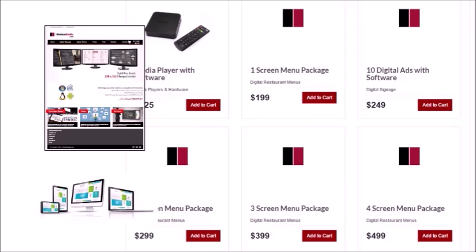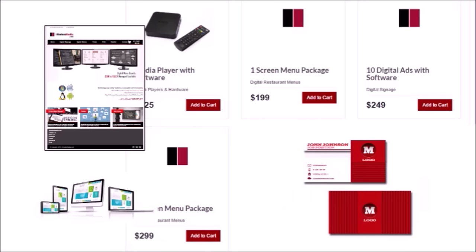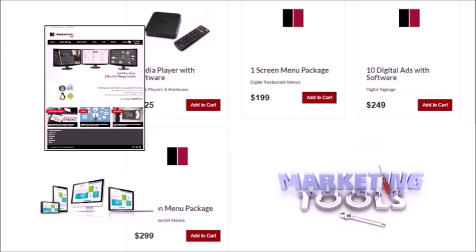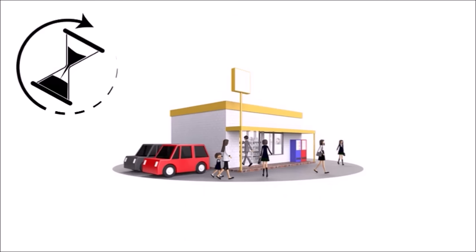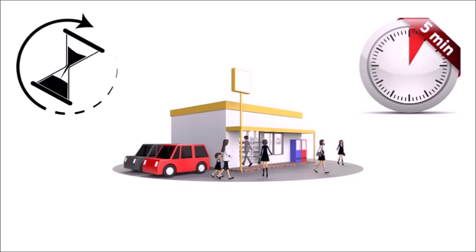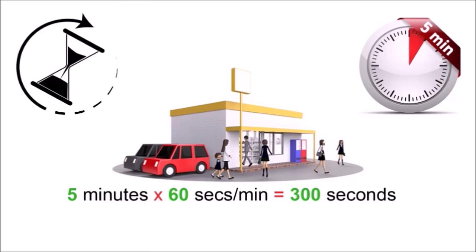Make sure you have a website advertising all your services as well as pricing, a PayPal account so you can accept payment, business cards, and all necessary marketing tools. Also, be sure to strategically calculate your loop time. In digital advertising, loop time is the length of time in which all your combined ads run from beginning to end. So if you are placing ads in a convenience store, note the average time spent there is about 5 minutes. 5 minutes times 60 seconds equals 300 seconds. Divide 300 seconds by 10 seconds per ad equals 30 ads — you can fit 30 ads in a convenience store.